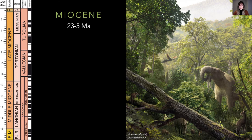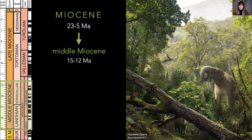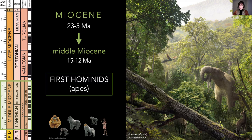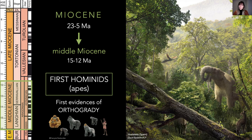To do so, I would like us to move back in time to the Miocene, an epoch that ranges from 23 to 5 million years ago. More specifically, I would like us to stop in the middle Miocene, around 15-12 million years ago. And why the middle Miocene? It is in this geological time when we first register the first hominids, the group of primates that includes the living orangutans, chimpanzees, bonobos, gorillas, and humans. We not only find the first hominids in the middle Miocene, but also the first undoubted evidences of something called orthogrady. We could say the middle Miocene is the starting evolutionary point for the origin of orthograde positional behaviors, including human terrestrial bipedalism.